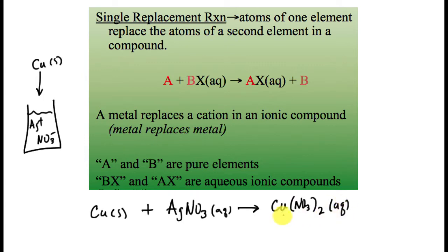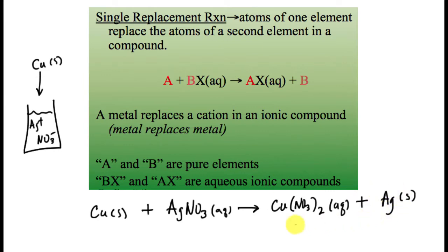The copper nitrate becomes aqueous, so my copper metal changes from solid to something that dissolves in water. Copper metal itself won't dissolve in plain water, so there's a chemical reaction between the copper and the silver nitrate. We end up with silver solid at the end — silver metal does not dissolve in water. The charges on the metals by themselves are zero, whereas silver has a +1 charge and copper now has a +2 charge, so there's a change in the charge.